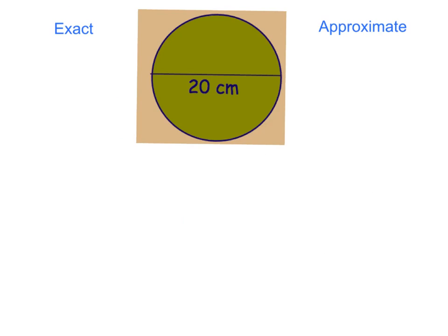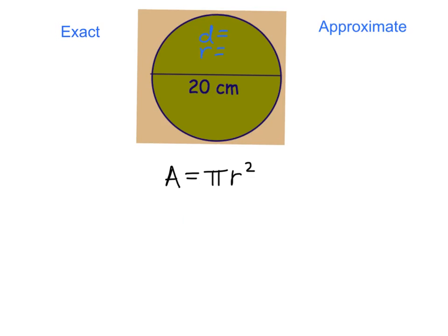We have a circle here, and we want to find the exact area and the approximate area. The area formula is pi r squared, so first thing I would always do is write that down. When working with circles, I usually come up by the circle and write down the diameter and the radius right away. The diameter of this circle all the way across is 20, and the radius is halfway across, so half of 20 is 10.